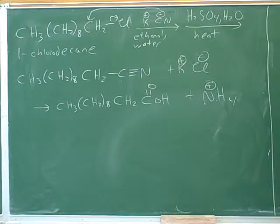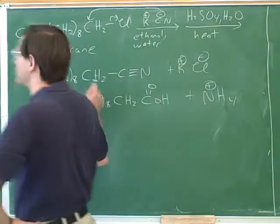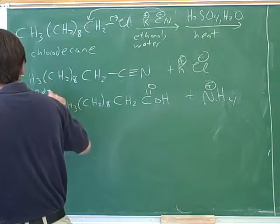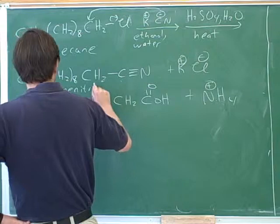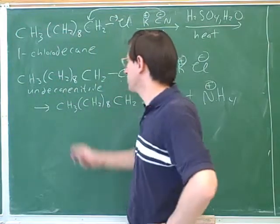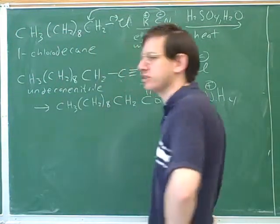Let's give a name to this compound. Now there's 11 carbons. And because the suffix starts with a consonant, we don't say 'an', we say 'ane' with an e. Undecane nitrile.